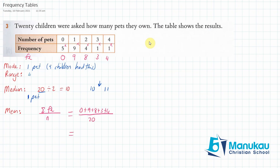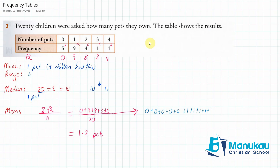This gives us a mean of 24 divided by 20, which is six over five, which is 1.2 pets. You might be wondering what this fx business is. Another way of thinking about it: we've got five people with zero pets, so it's zero plus zero plus zero plus zero plus zero, and nine people with one pet, so one plus one plus one... which equals nine. And four lots of two gives eight. So fx is just a short way of working things out. I hope that helps you make a start on this exercise. Do let me know if you're having any issues, and I'll see how I can help. Good luck team!